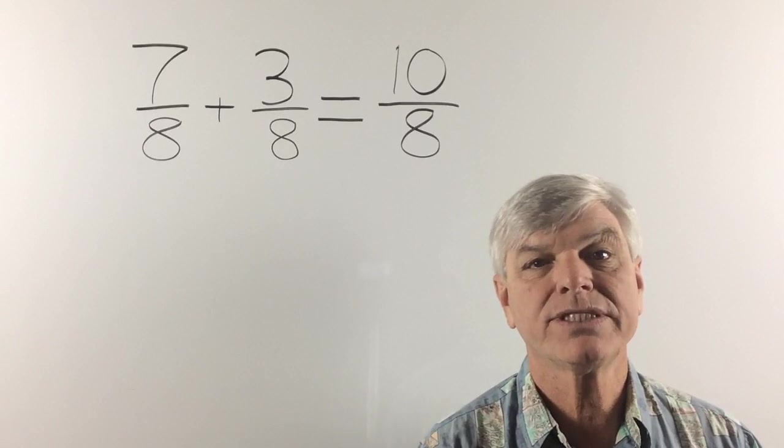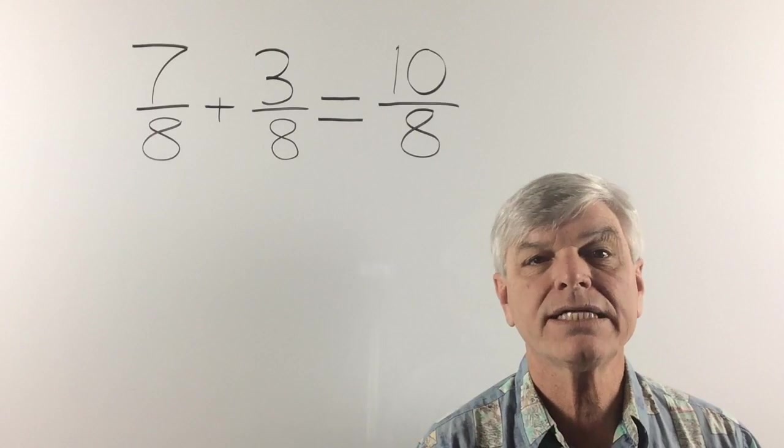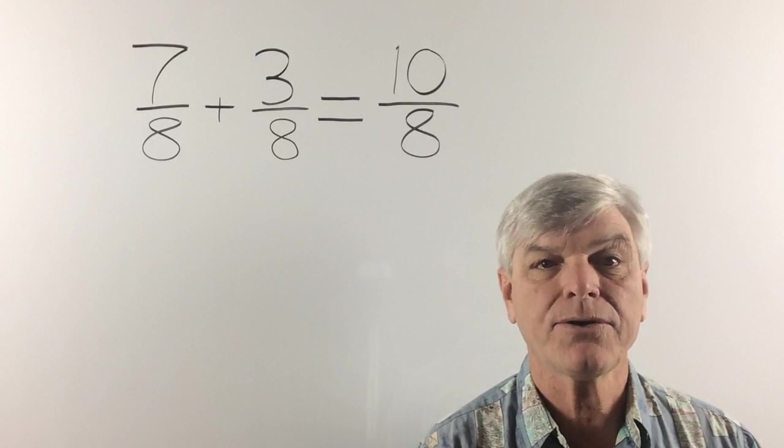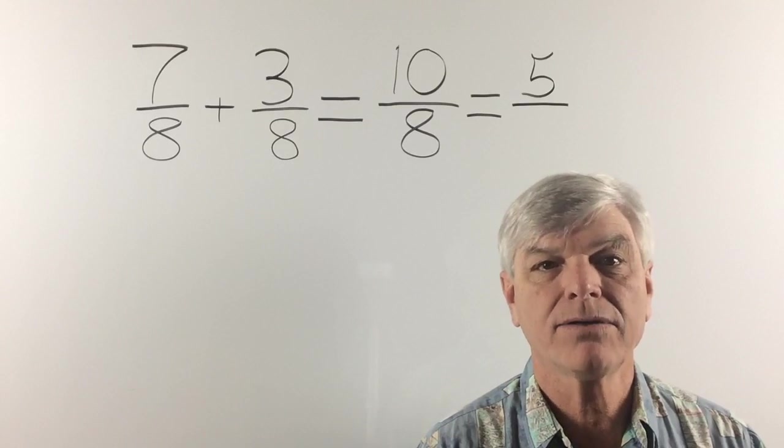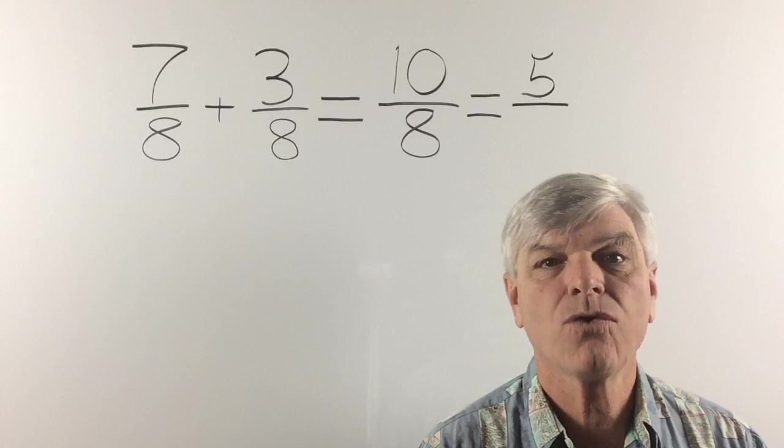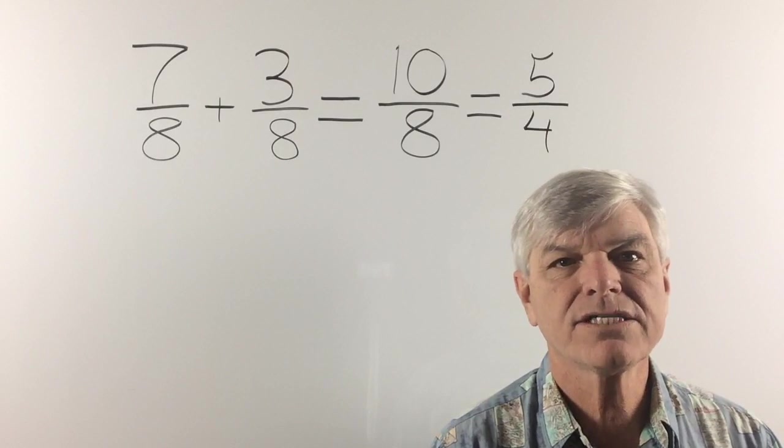But that's okay in algebra as we stated previously. But we do need to reduce it. So let's divide 10 by 2. And of course we have to divide the denominator by the same amount. 8 divided by 2 is 4. And for this problem, that will be our final answer. Now let's move on to subtraction.